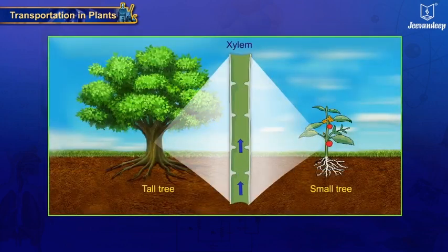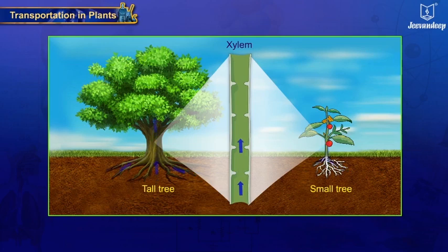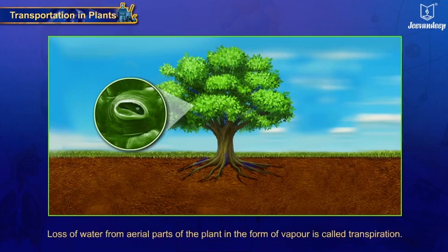This continuous movement of water from the soil to the xylem tissue creates root pressure, which can push water upward. However, this pressure is not enough to push water up in tall trees, but it is enough to push up the water and minerals in small plants like herbs, bushes, and even small trees.